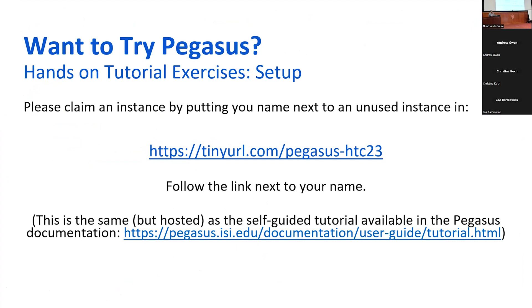Earlier this week I did give a Pegasus tutorial, and I just wanted to reiterate: if any of you would like to try out Pegasus, we still have the tutorial instance alive. You can claim a training account and do the training exercises. The tutorial is also hosted as a self-guided tutorial available on the OSG website. If you want to try out Pegasus on your own laptop, you can download the tutorial container and do the exercises yourself.